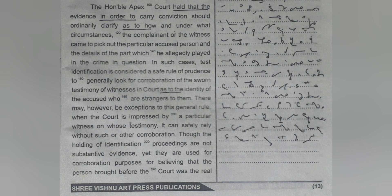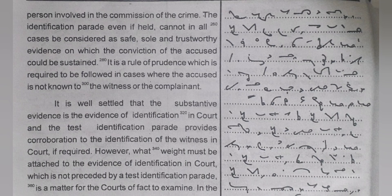Though the holding of identification proceedings is not substantive evidence, it is used for corroboration purposes for believing that the person brought before the court was the real person involved in the commission of the crime. The identification parade, even if held, cannot in all cases be considered as safe, sole, and trustworthy evidence on which the conviction of the accused could be sustained. It is a rule of prudence required to be followed in cases where the accused is not known to the witness or the complainant. The substantive evidence is the evidence of identification in court.